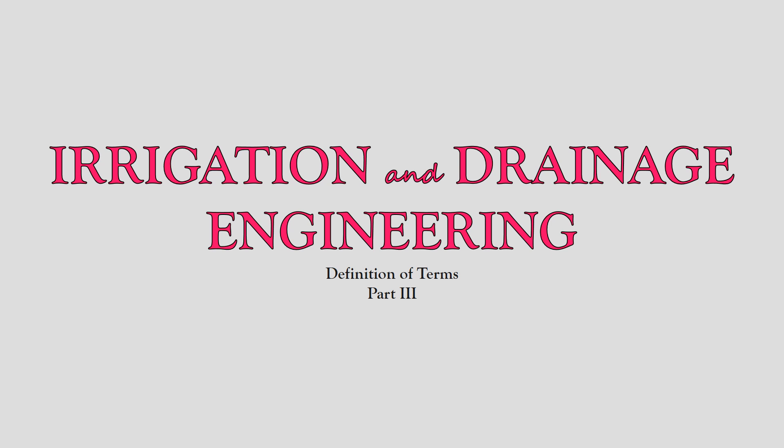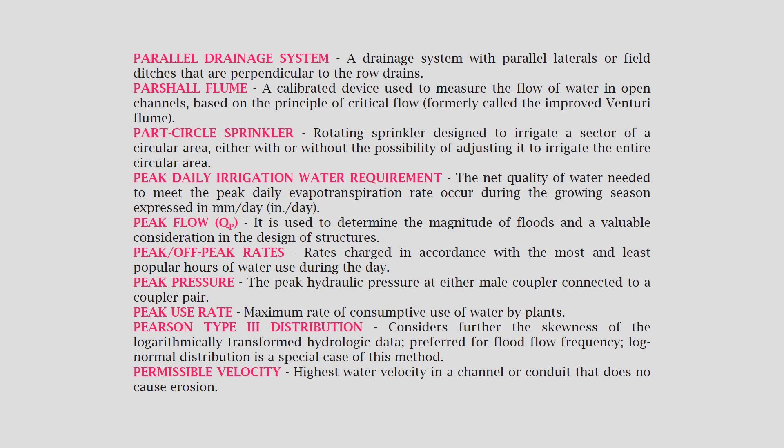Hello and welcome back again, coffee beans. This is Irrigation and Drainage Engineering, Definition of Terms, Part 3. Parallel drainage system: a drainage system with parallel laterals are field ditches that are perpendicular to the row drains.